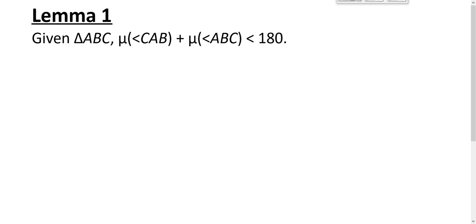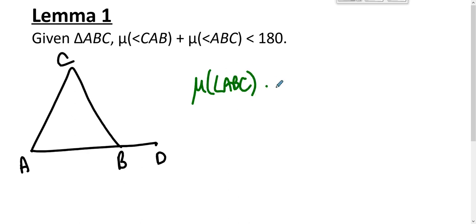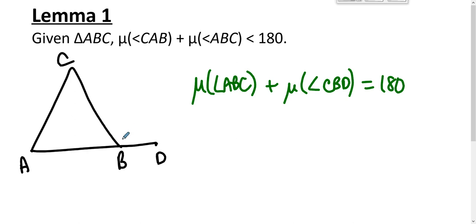Here's the first lemma: given triangle ABC, the measure of angle CAB plus the measure of angle ABC is less than 180. That is to say, any two angle measures in a triangle must add up to less than 180. We find a point D on ray AB such that B is between A and D, and by the linear pair theorem, the measure of angle ABC plus the measure of angle CBD equals 180.